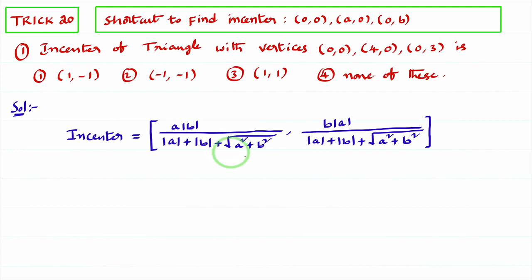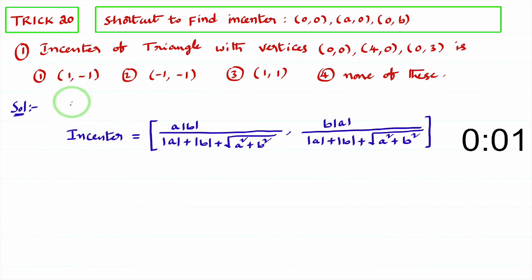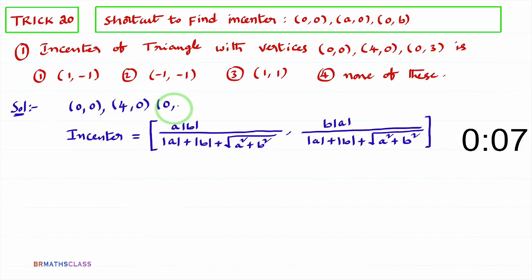You can observe that the denominator part is the same for both coordinates. Now let's start the solution for this problem. The given vertices are (0,0), (4,0), and (0,3).